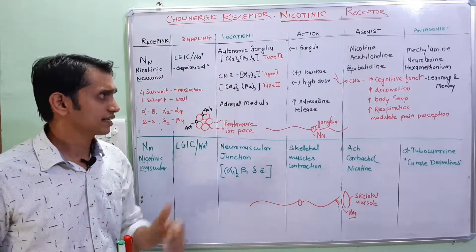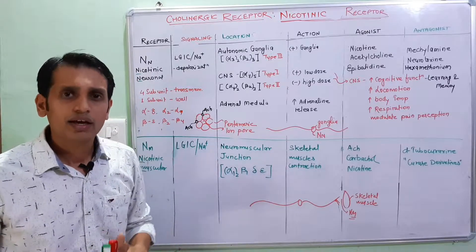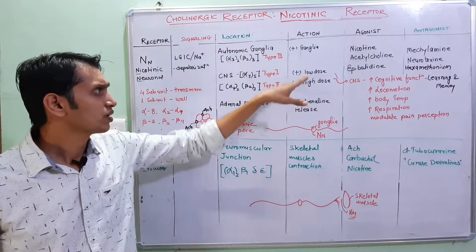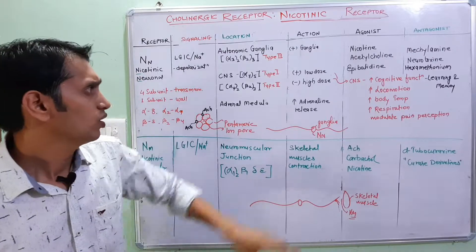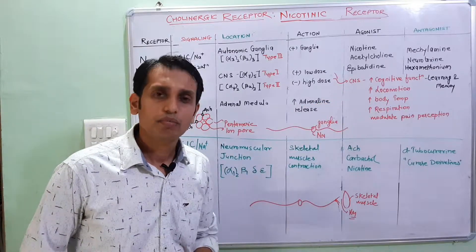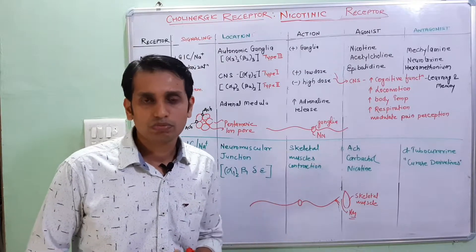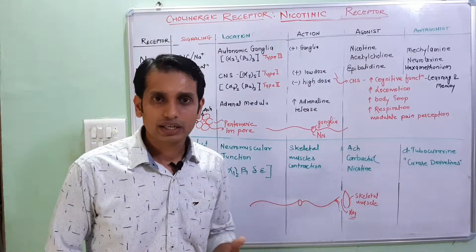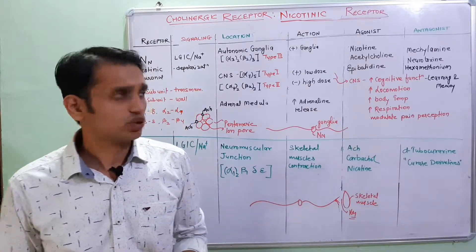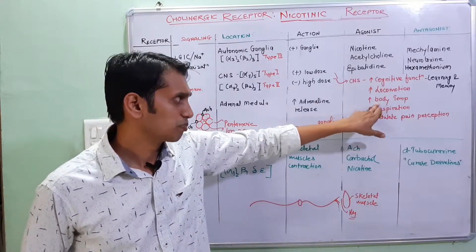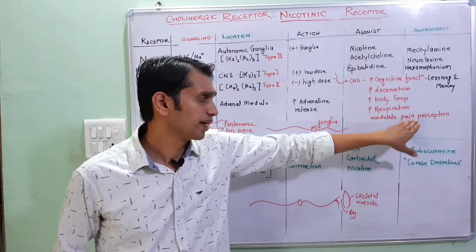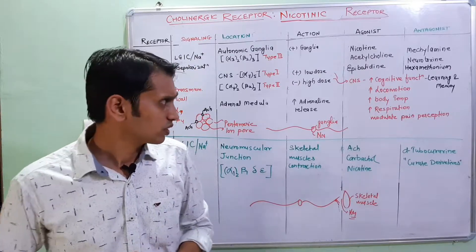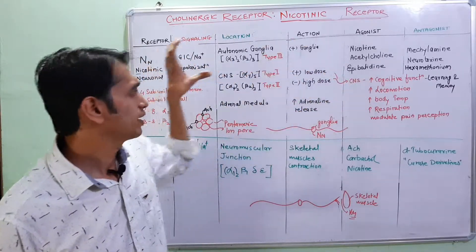In the CNS, the activity of NN receptors is variable — high dose causes increased CNS activity and low dose causes reduced activity. For specific actions: it enhances cognitive function, meaning learning and memory, and therefore it can be used in Alzheimer's disease. Second, it enhances locomotion, meaning motor activity and motor function. It also increases body temperature, respiration, and modulates pain perception — the pain feeling and pain sensation can be altered.